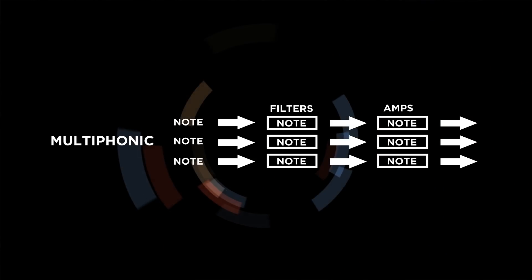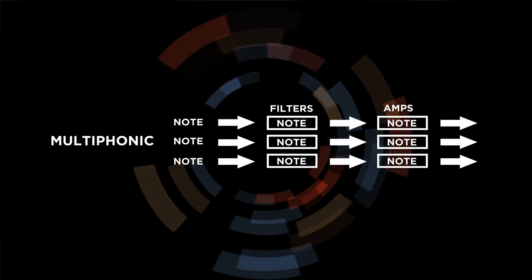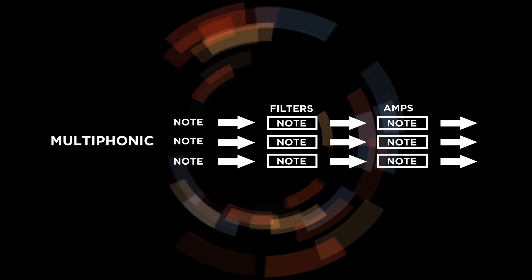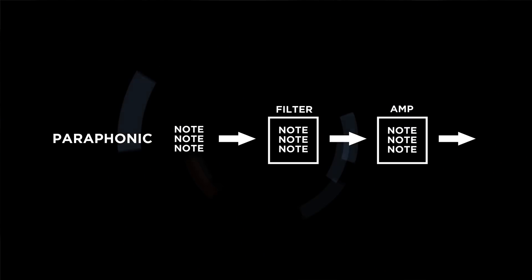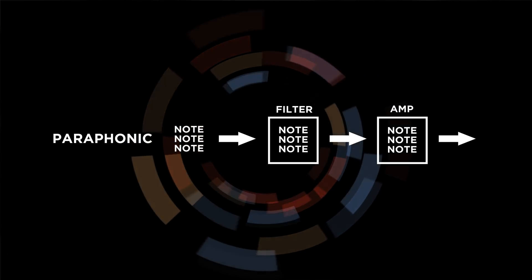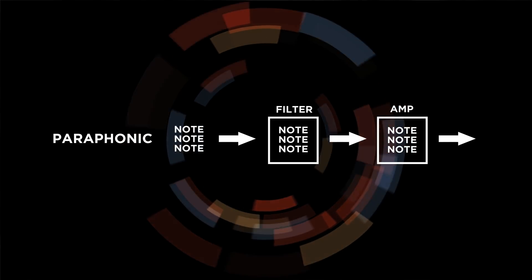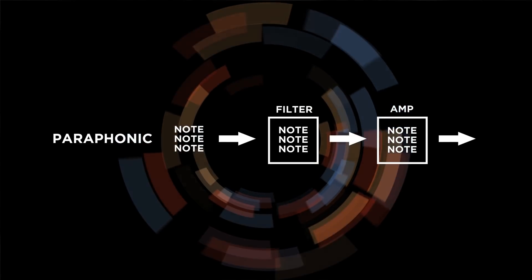So we have multiphonic, which describes synths like the CS80, the Prophet 5, or any number of others — all the Oberheim synths, the later Oberheim polyphonic synths — where you have a limited note count but full articulation. Then on the other side, there were synths like the ARP OMNI, which was probably the biggest selling synthesizer of all time before the DX7. It had full polyphony — every note played independently — but it only had one articulative structure. It was all notes through a single synthesizer articulation, which was of course one filter and an amp. And that's what we came to call paraphonic.